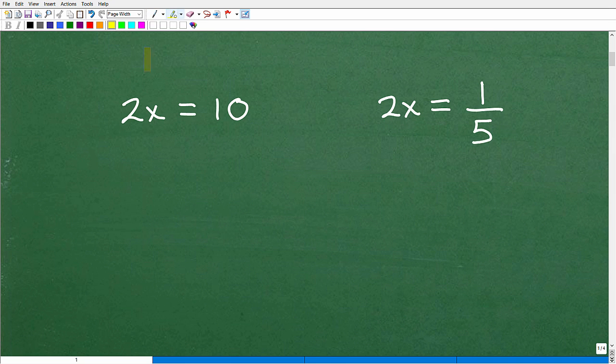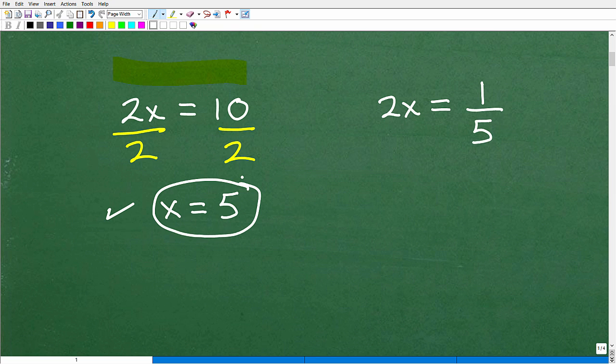Let's take this first guy right here. So I have 2x is equal to 10. How do I solve this basic one-step equation? Well, hopefully you're saying, don't we have to divide both sides of the equation by 2? Absolutely, that's exactly what we need to do. So I have 2 divided by 2, that's going to be 1 or 1x. So x is equal to 10 divided by 2, which is 5. That is the solution.